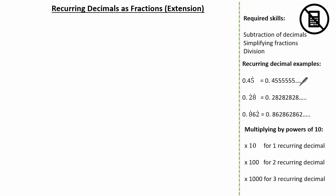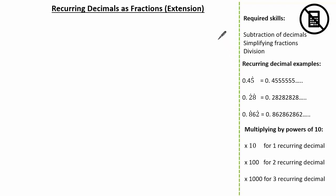It's important to remember the notation that we use to represent our recurring decimals, as well as recognising when to multiply by 10 when we have one recurring decimal, when to multiply by 100 when we have two recurring decimals, or when we multiply by 1000 when we have three recurring decimals. So let's make a start by looking at our first question.